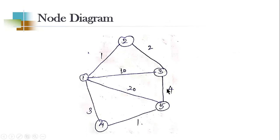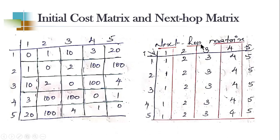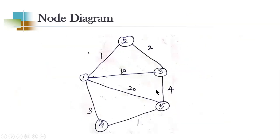This is almost the same example we used in Dijkstra's algorithm. We have five nodes, and the weights or costs between the nodes are shown. What we do first is write the initial cost and path metrics — but here, for distance vector routing, we write a next hop matrix instead. So the cost metrics have no changes; it is the same as in Dijkstra's algorithm, written based on the node diagram.